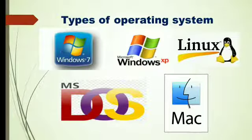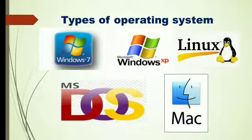There are some types of operating systems: Windows 7, Windows XP, Linux, MS-DOS, Mac, etc. These are some types of operating systems.